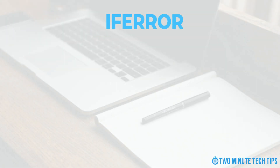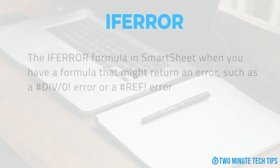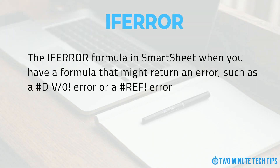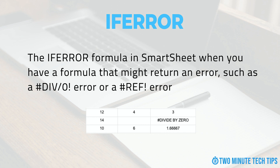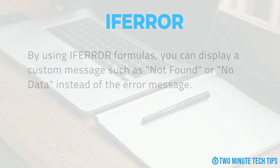IFERROR formulas in Smartsheet can be used when you have a formula that might return an error. They are used in conjunction with other formulas. This formula allows you to specify what value you want to display in the cell if the formula returns an error. For example, if you have a formula that divides one cell by another cell but sometimes the second cell is blank, the formula will return an error. To avoid displaying this error message, you can use IFERROR formulas to display a custom message such as 'no data.'